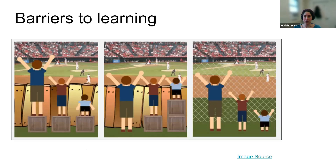When I talk about universal design for learning, I like to start with this graphic that talks about the historical applications as well as what we're striving towards. What we see here is three children trying to watch a baseball game. Initially, they're all standing on the same size wooden crates, and the shortest child is not able to see any of the action.